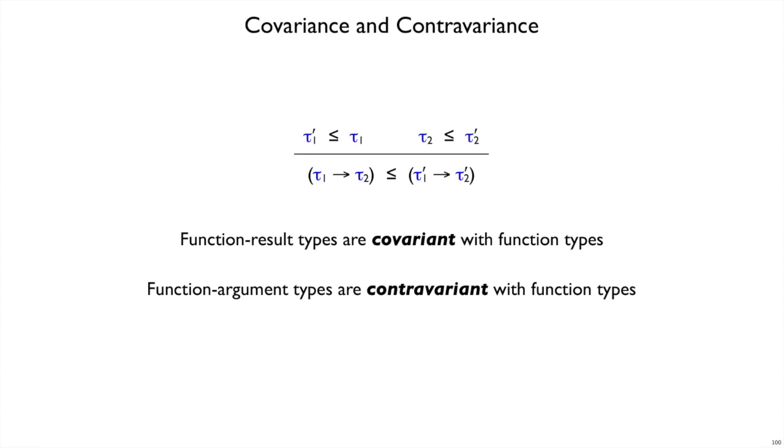When we're looking at two function types and asking whether one is a subtype of the other, then the argument and result types in those function types get involved, but in opposite ways.